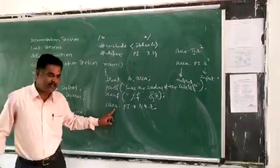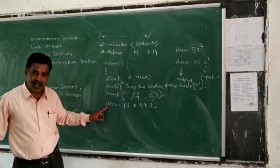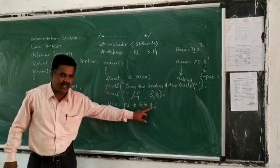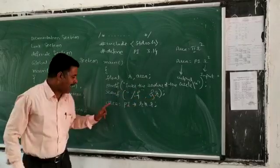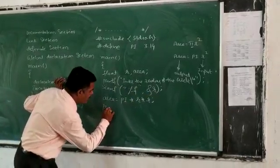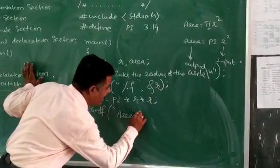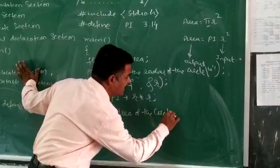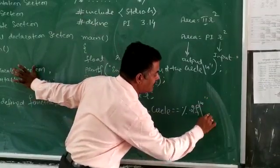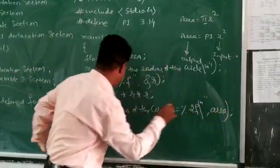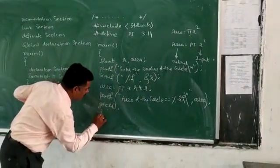Area equals PI * R². R is the input value taken from the keyboard, and area is the output value. For output, we use printf to display 'area of the circle' with format %.2f and backslash n, then area. Finally, getch() is called and the program is closed.